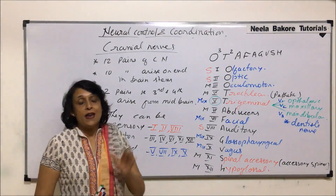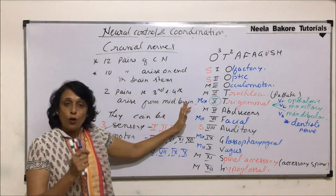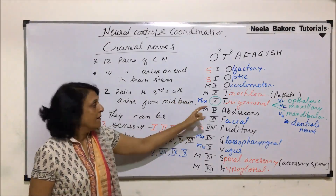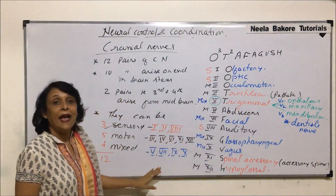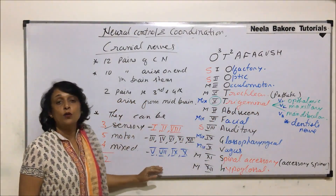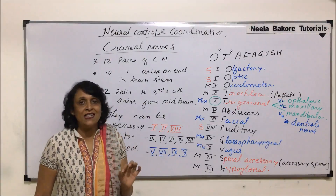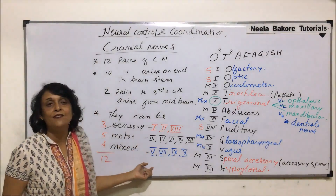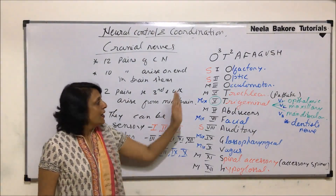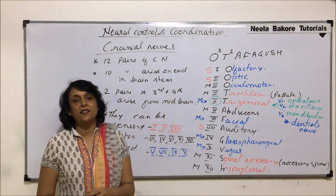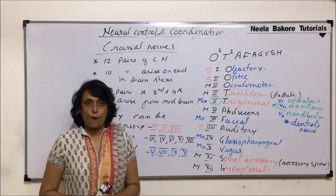So now we know the names of all twelve cranial nerves along with their numbers. We also have additional information about which are pure sensory, pure motor, and which are mixed. Next we will understand all twelve cranial nerves and their functions in a tabular form.